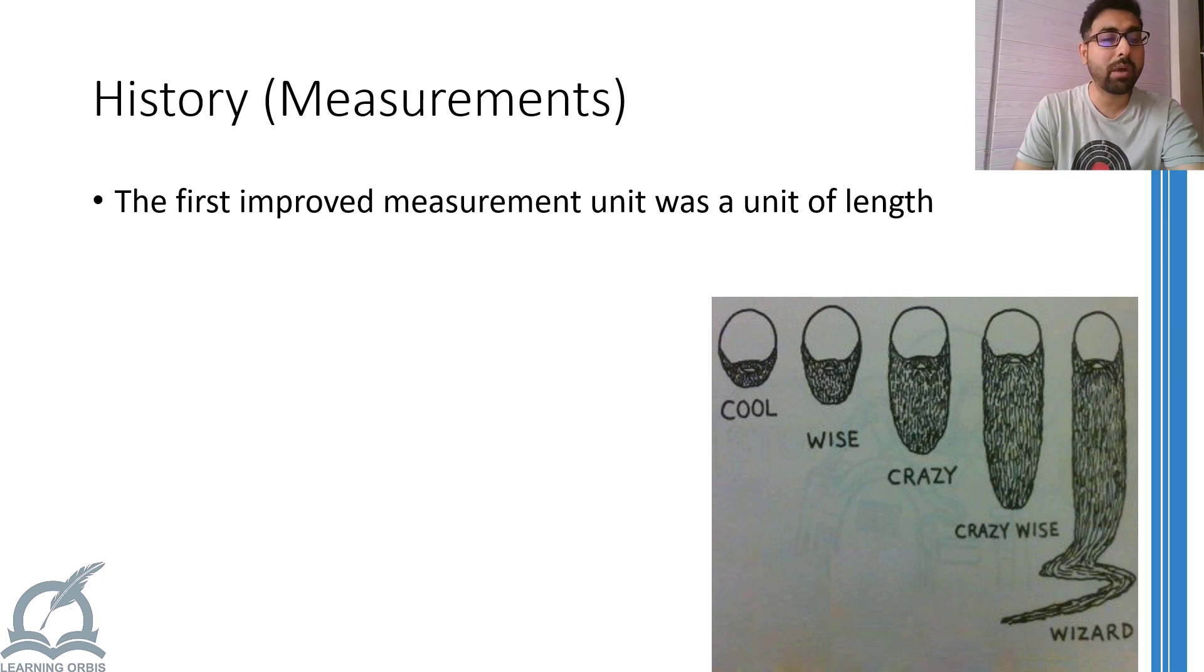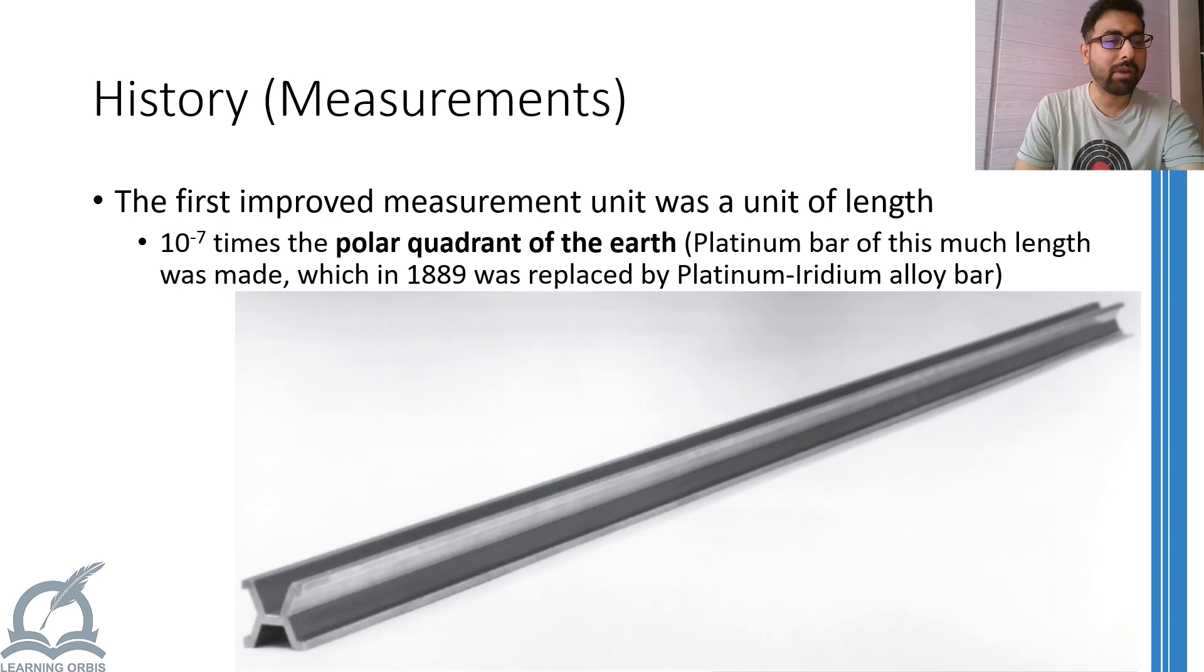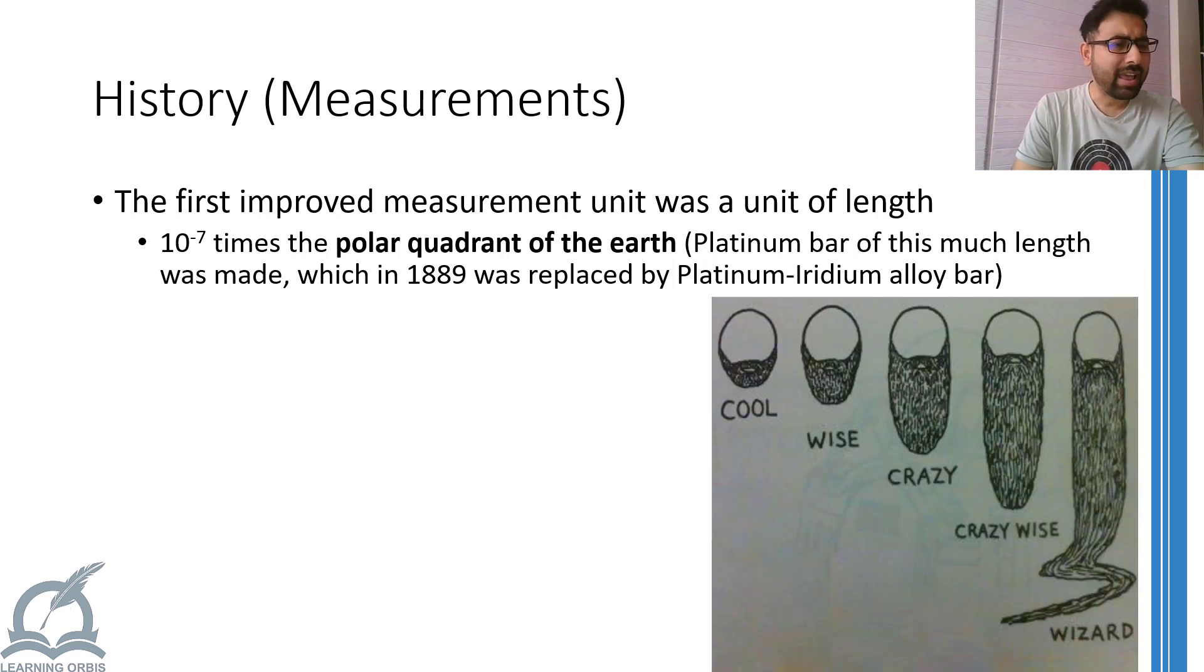it was defined as 10 raised to the power minus 7 times the polar quadrant of the Earth and the platinum bar of this much length was made and stood in a controlled environment. Later on, in 1889, a platinum-iridium alloy bar replaced a simple platinum bar.